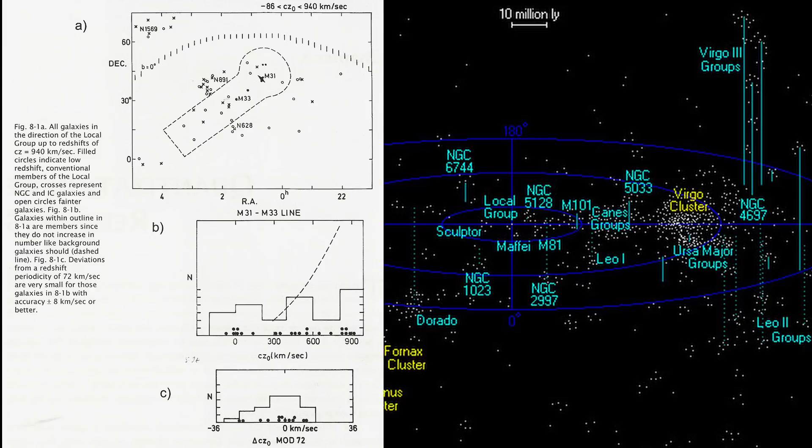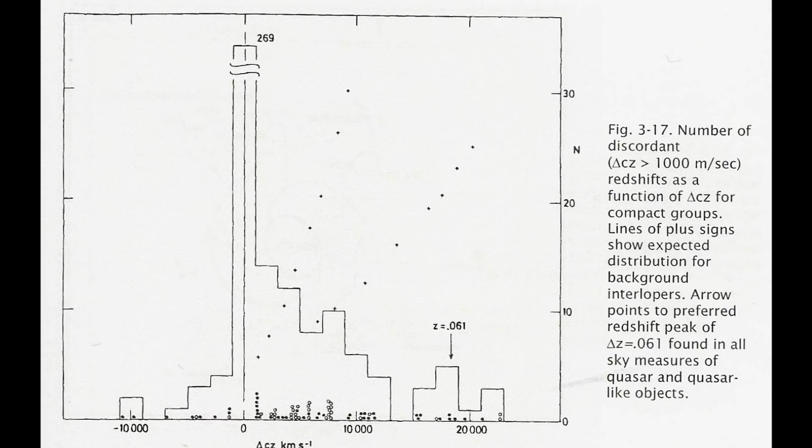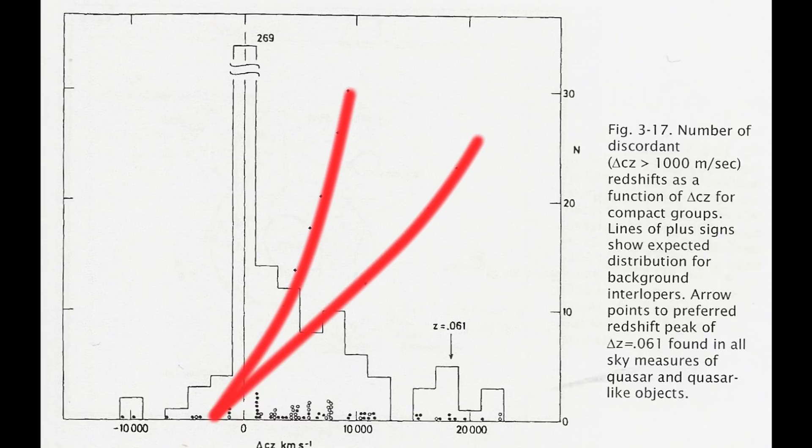Now one point that is often argued in the case of some of these compact galaxy groups is that one or other of the highly redshifted galaxies is not actually part of the group but is situated much further back. The problem with this thinking is that if that were true then you would expect to find exponentially more background galaxies with higher redshifts in comparison to other galaxies. And what we actually find is the opposite they actually decrease.